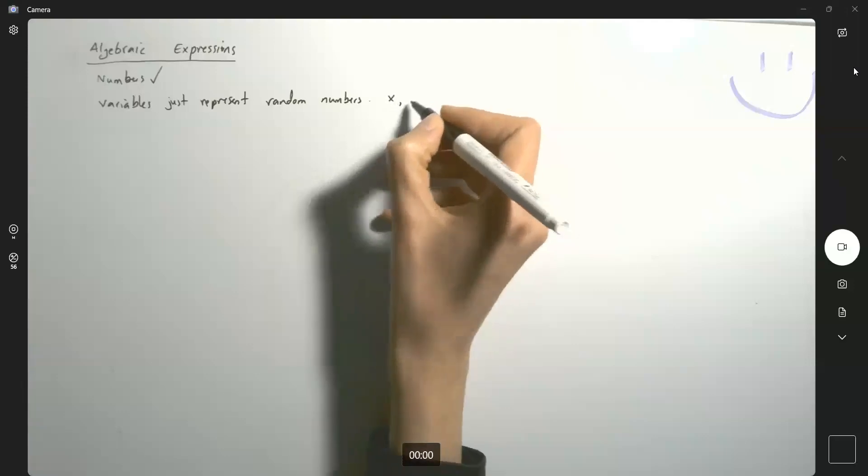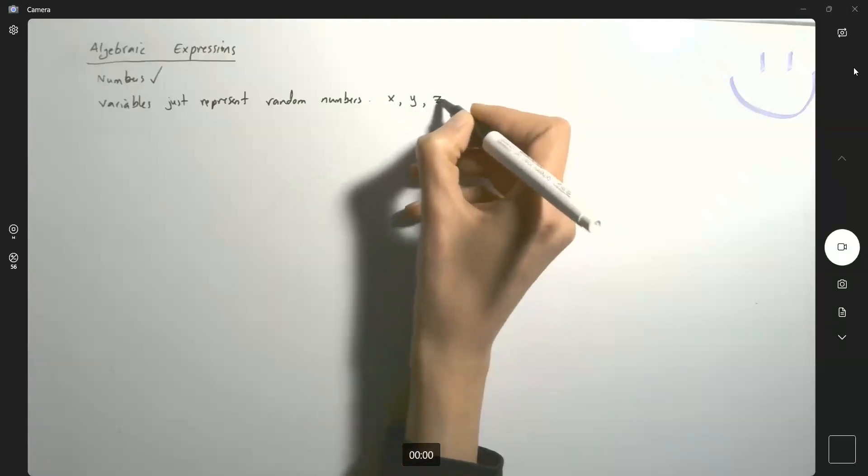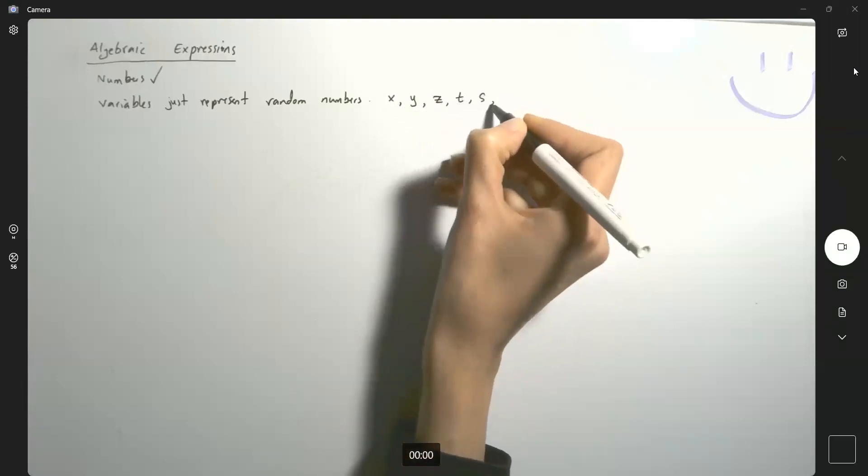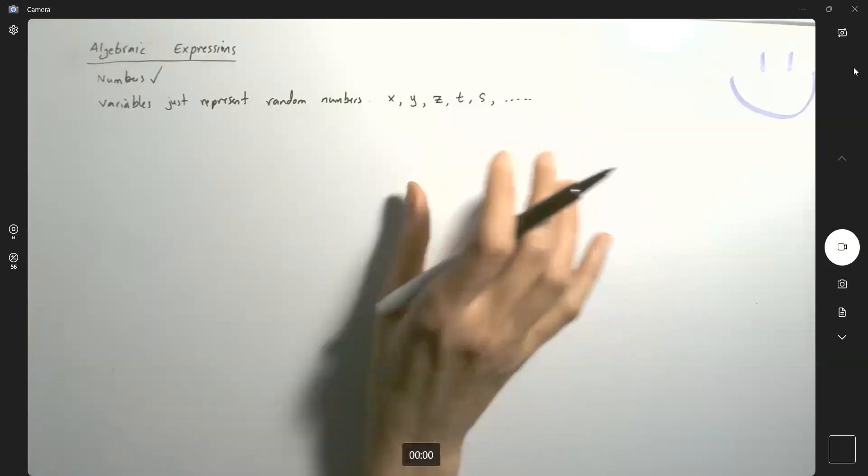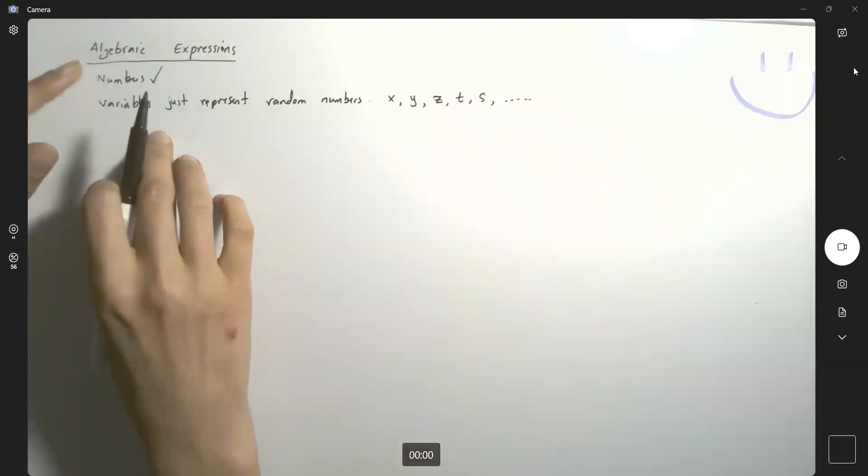Like what? Like x, like y, like z, like t, like s. These are all variables that we use instead of repeating numbers.